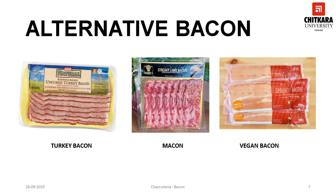Next is macon. Macon is another alternative to bacon produced by curing cuts of mutton in a manner similar to the production of pork bacon.